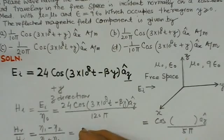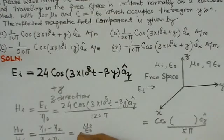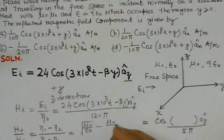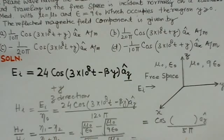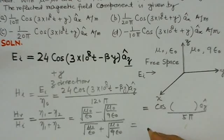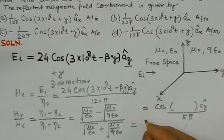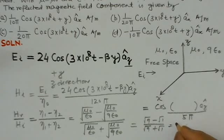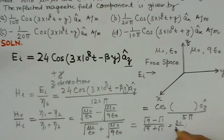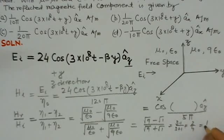Because η1 is free space, this could be written as (μ0/ε0) minus (μ0/9ε0) over (μ0/ε0) plus (μ0/9ε0). This equation can be simplified. After cancellation, this is (√9 - √1) over (√9 + √1), that comes to (3 - 1) over (3 + 1), which is 2 over 4 equals 1/2.